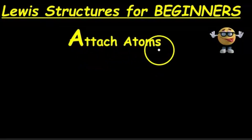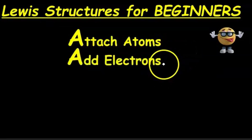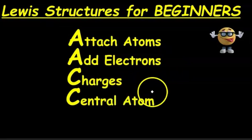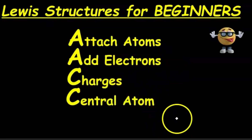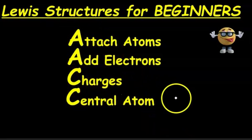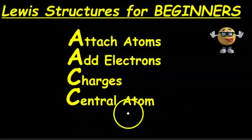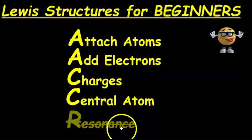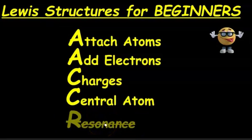First we want to attach the atoms — step one. Step two, you want to add the electrons. Step three, you want to add the charges. And then lastly, you want to deal with the central atoms. So AACC are your steps here. This will give you a valid Lewis structure. But after this, you may be asked to draw resonance structures, and that's a different beast in itself, so we're not going to cover that in this beginner video.